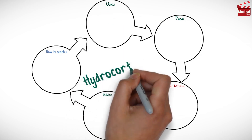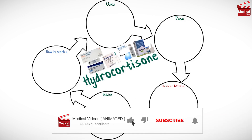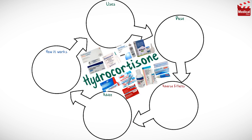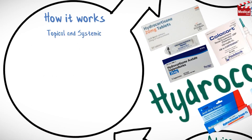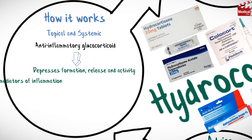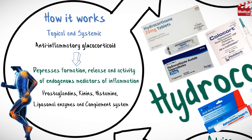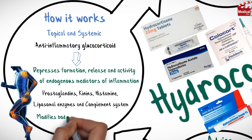In this video we'll briefly discuss what is hydrocortisone and how it works, what it's used for, the dose, side effects, and contraindications and precautions. Hydrocortisone is a topical and systemic anti-inflammatory glucocorticoid. It depresses formation, release, and activity of endogenous mediators of inflammation including prostaglandins, kinins, histamine, liposomal enzymes, and complement system, and it also modifies the body's immune response.